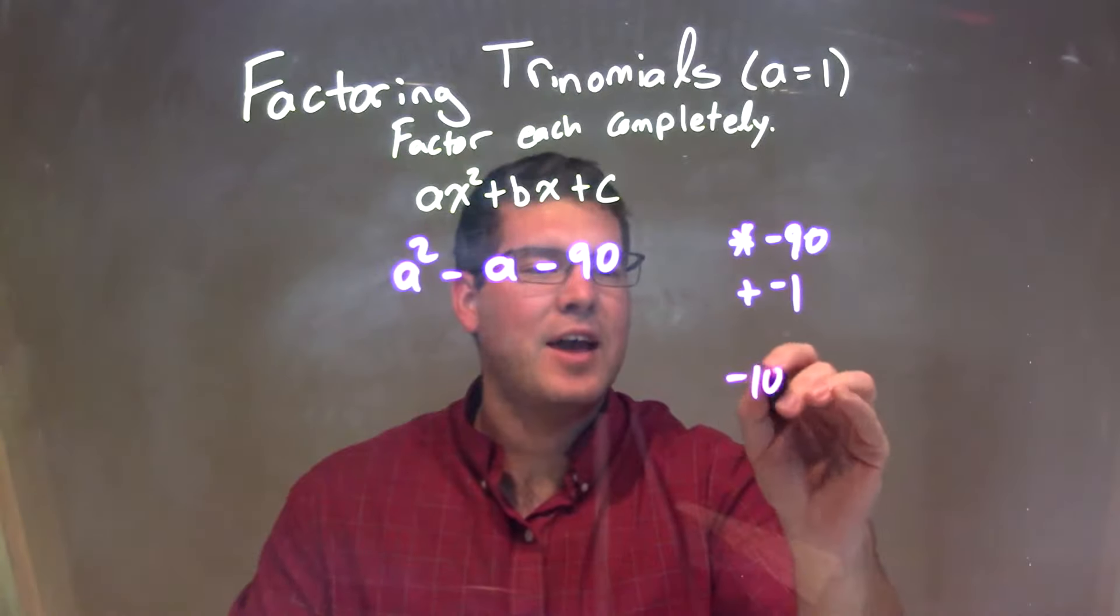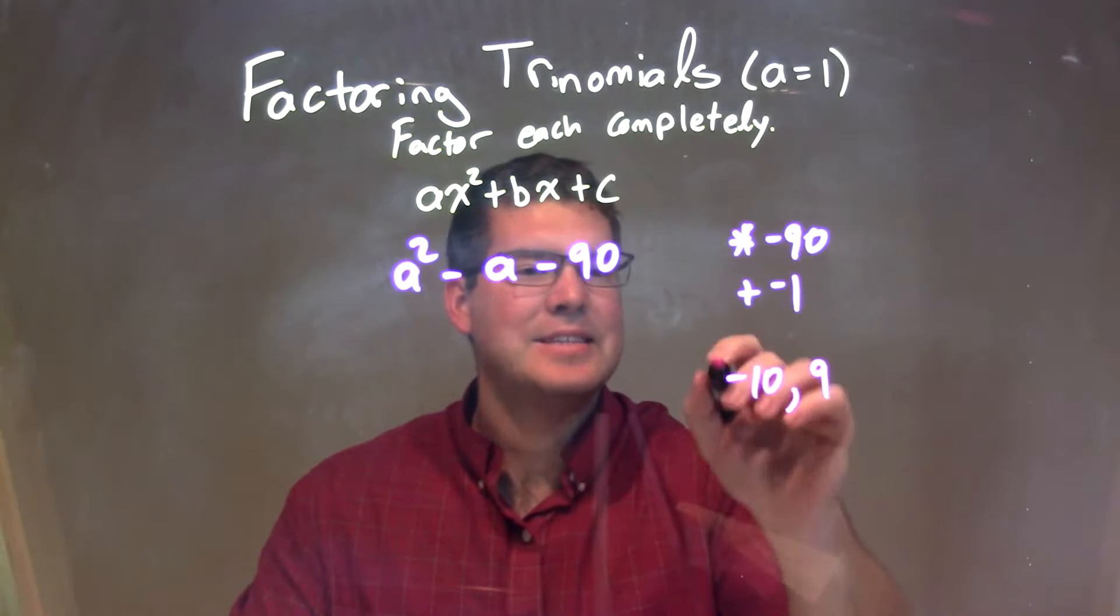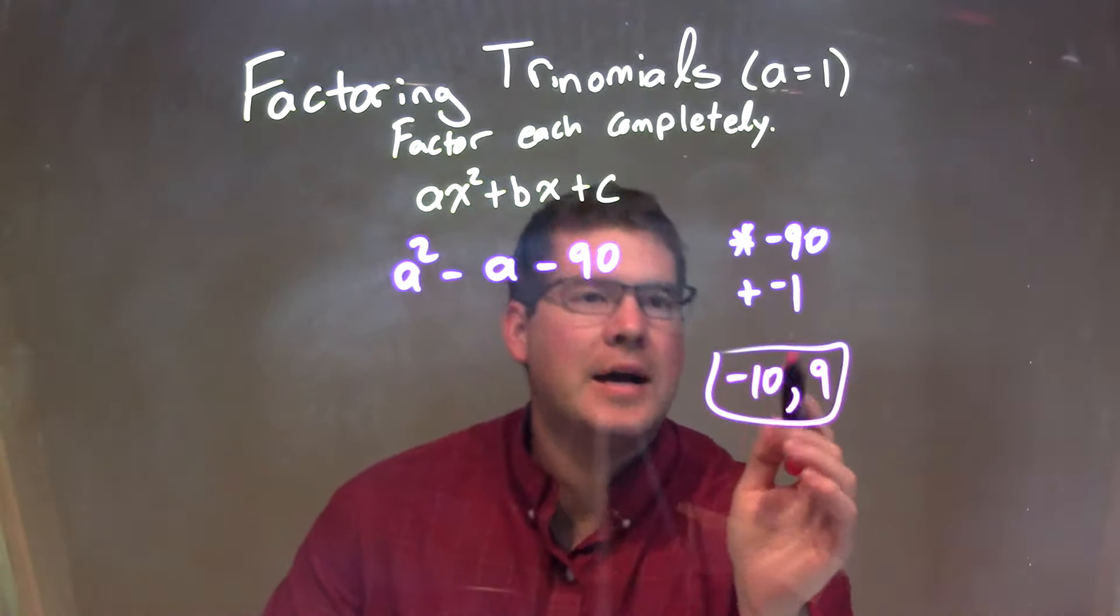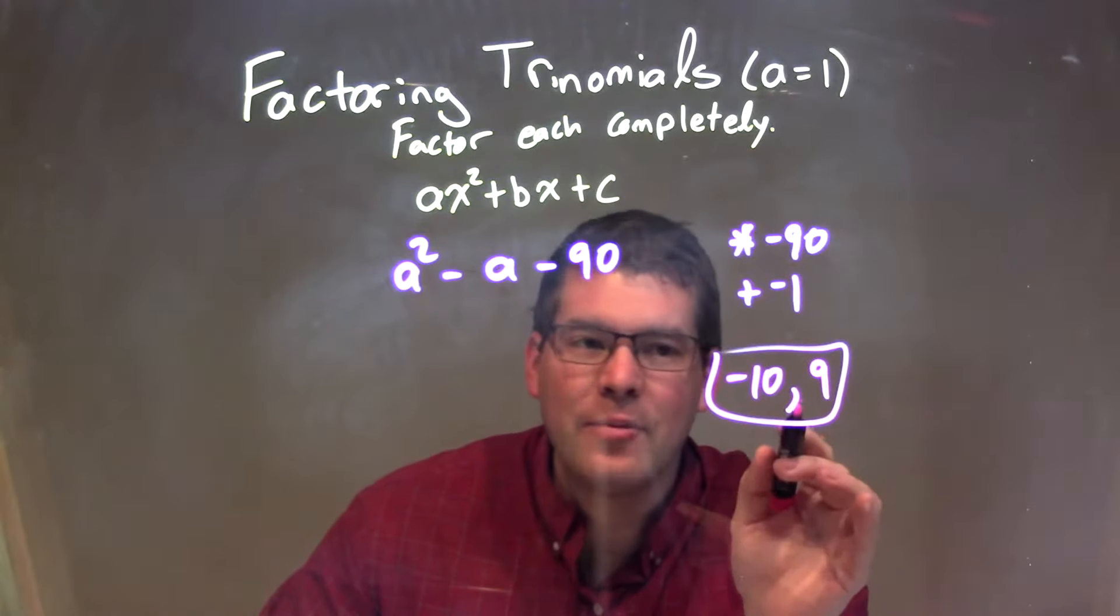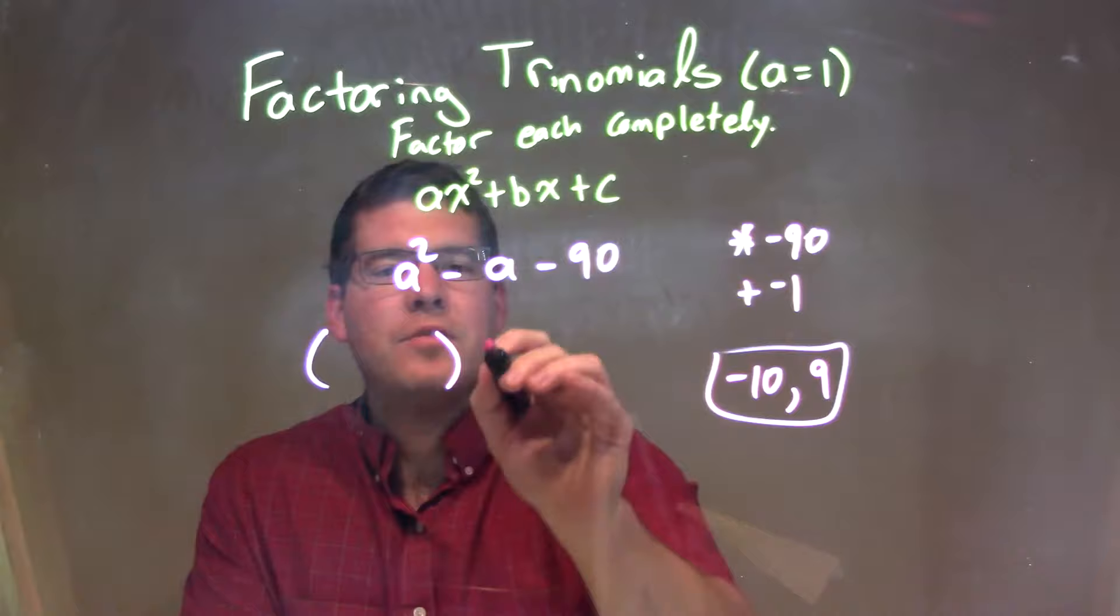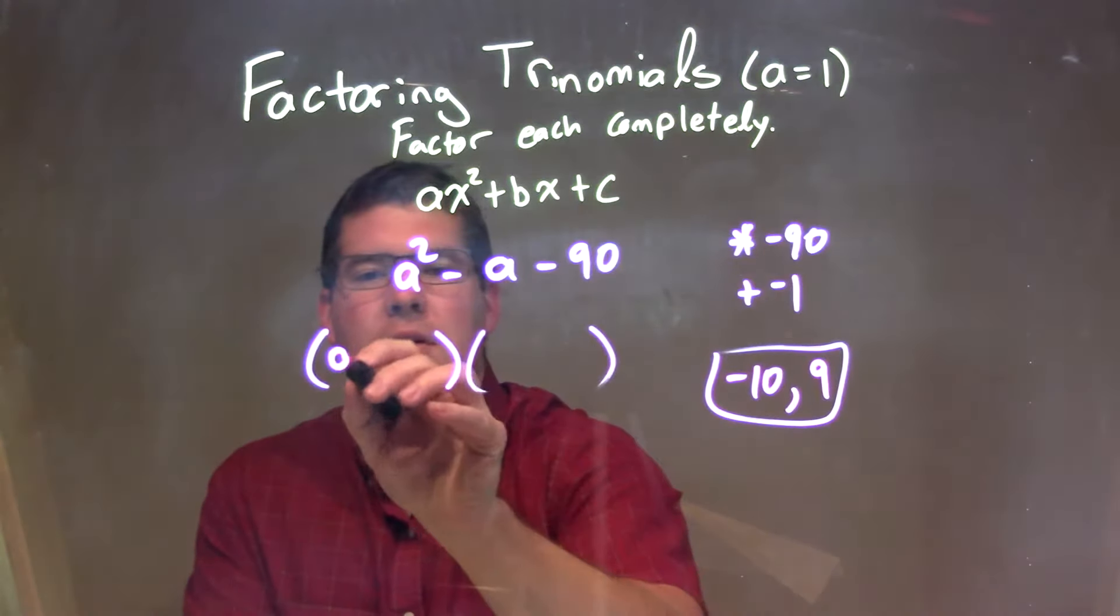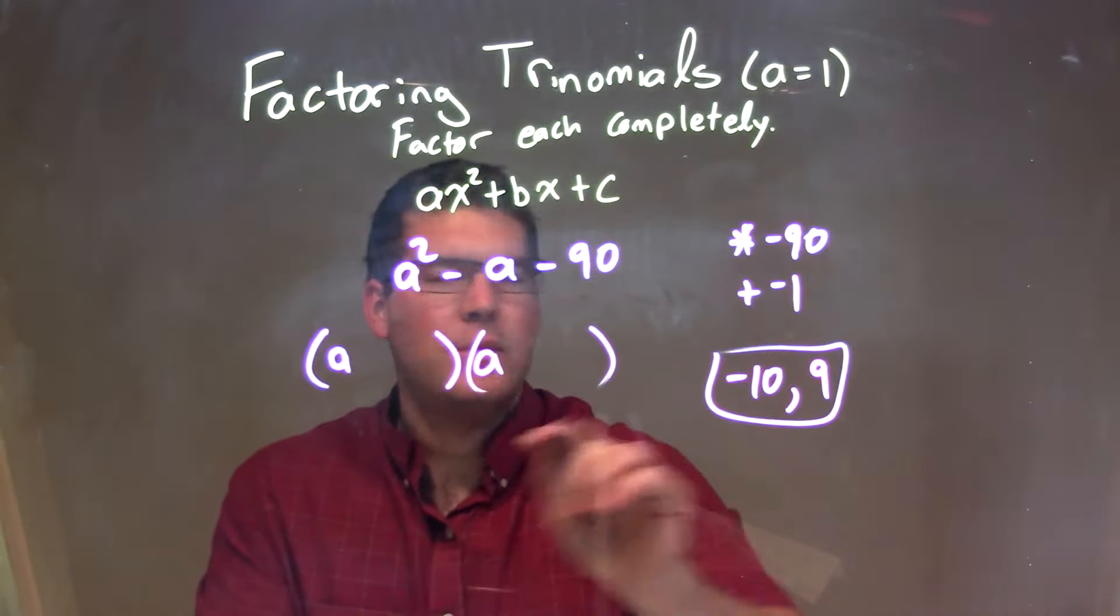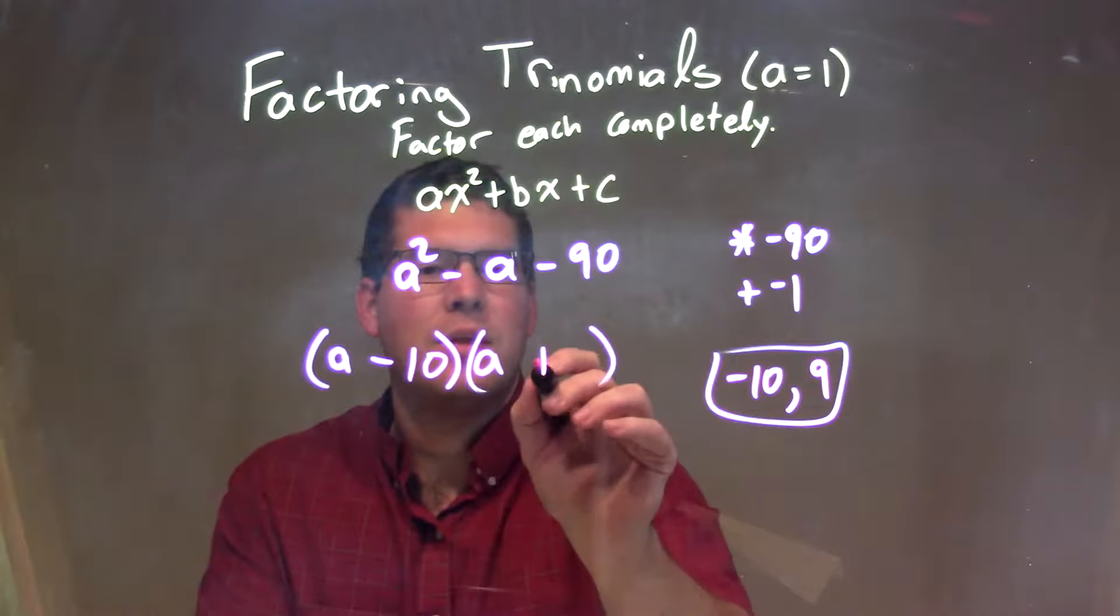So my two numbers here, negative 10 and positive 9, together multiply to be negative 90, but when I add them, I get negative 1. So when I factor this out, I have my two parentheses here. A value in the beginning of each one, and then we just have minus 10 and plus 9.